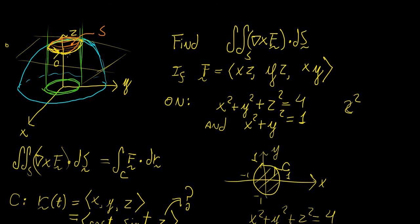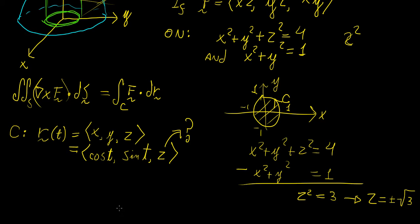So basically, this curve exists at the point or at the plane Z equals to positive square root 3. So that is the plane or the function of Z that we're going to put into our parametric equation here. So this is going to be cosine of t, sine of t, and then square root 3.